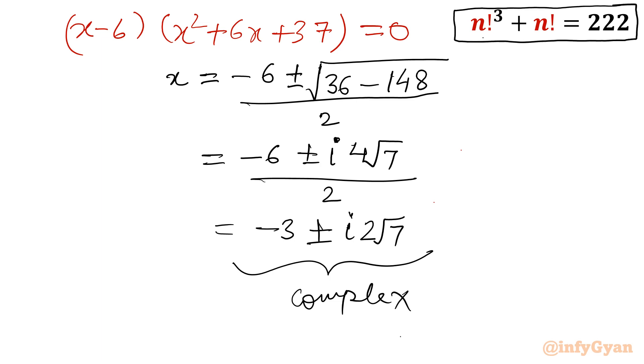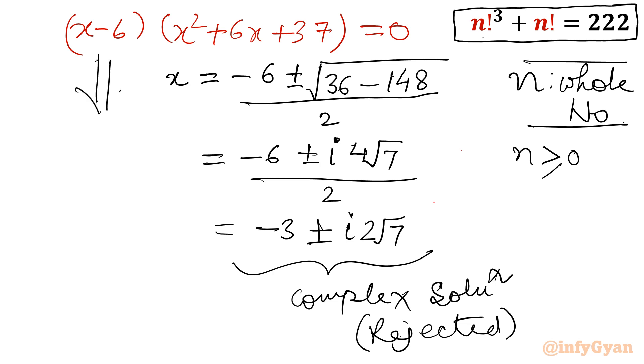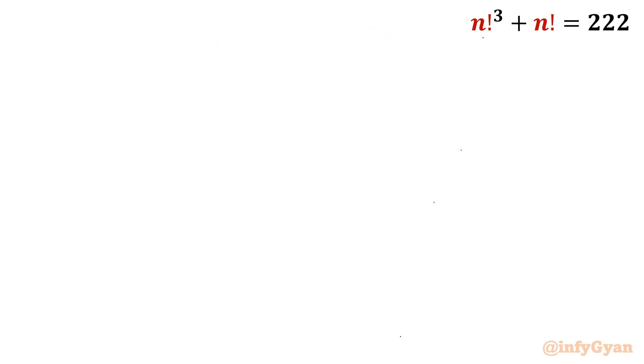Now, we need to call n. So x equal to n, and n factorial's domain is natural numbers. This is complex number or complex solution, so we will reject this. So which solution is accepted? That is x minus 6. So x equal to 6 is our solution with respect to x. Now, x is our substitution. Let me write here.